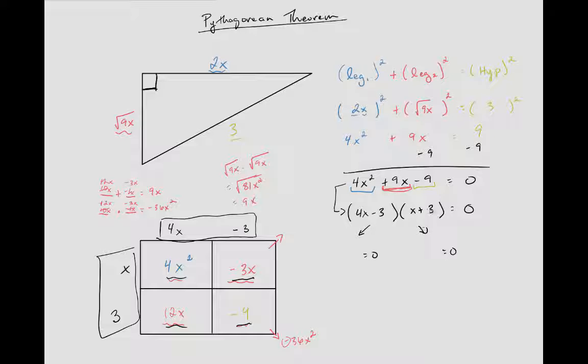What we're going to say now is if this piece is zero, then zero times anything is zero. I'll figure out when 4x - 3 equals zero, or when x + 3 equals zero. We're going to find one of these answers won't make sense.